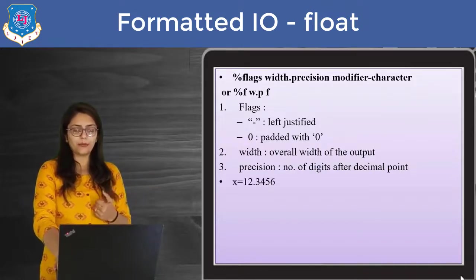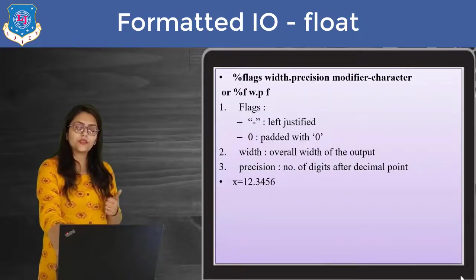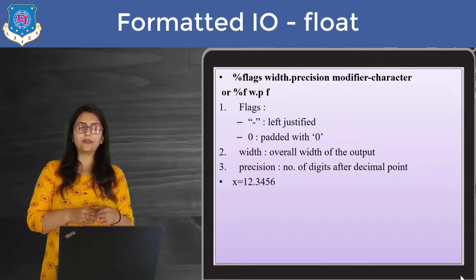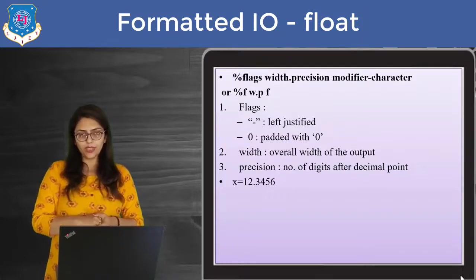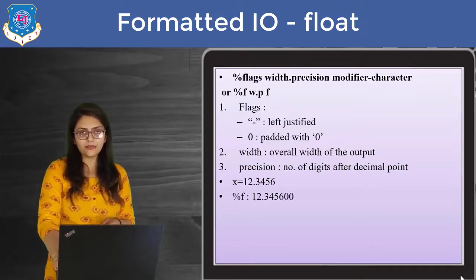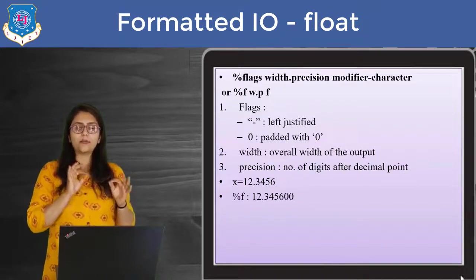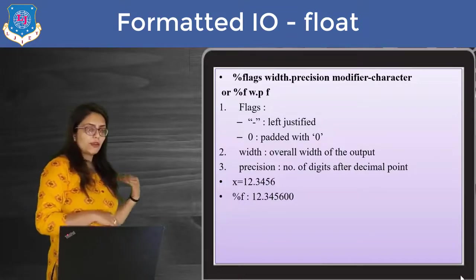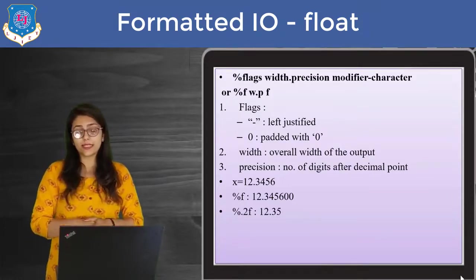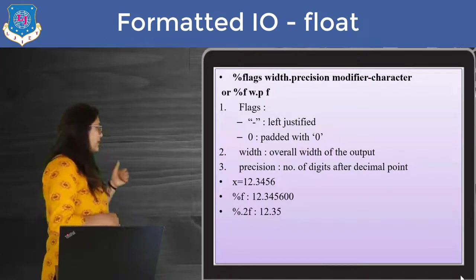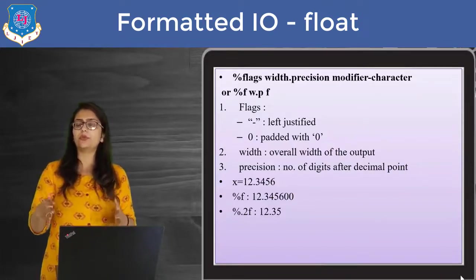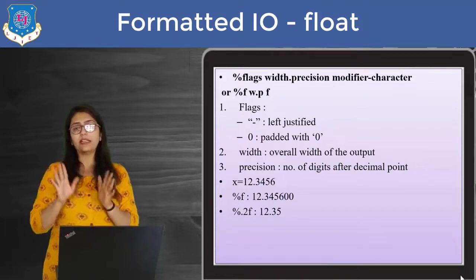Here x is equal to 12.3456 — total six digits, with four digits after the decimal. If I just print %f, it will print 12.345600 because %f prints up to six decimal places by default. But if I don't want six decimal places and just want two decimal places, I write %.2f, and it will print 12.35.